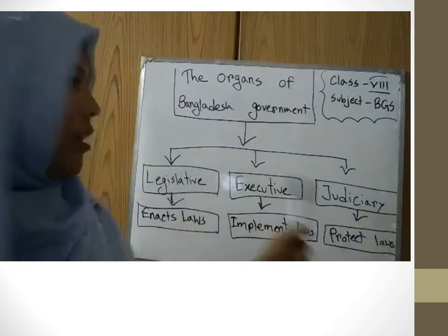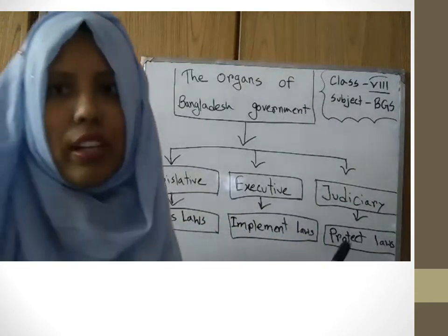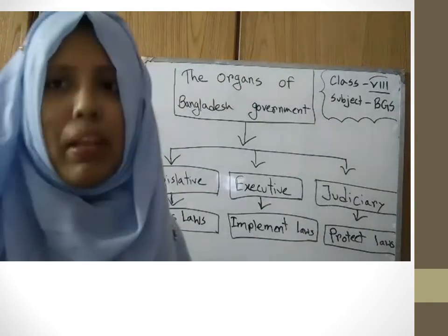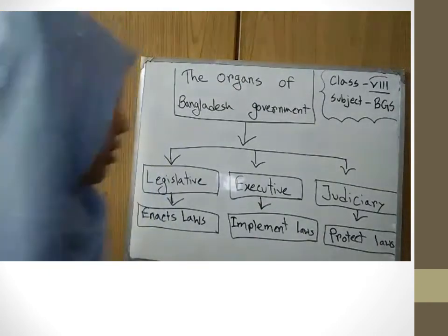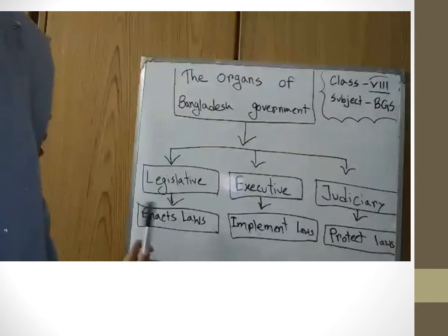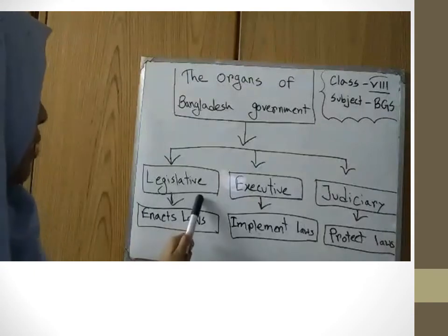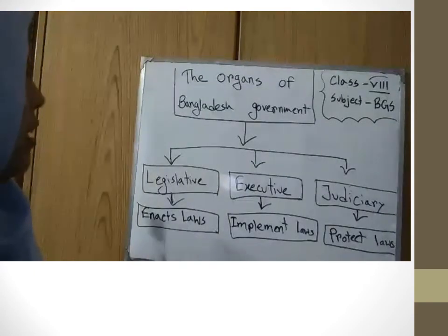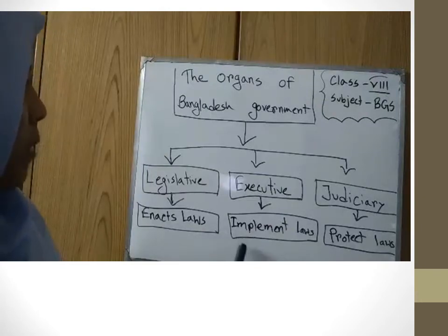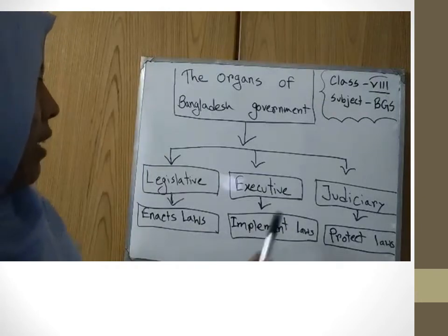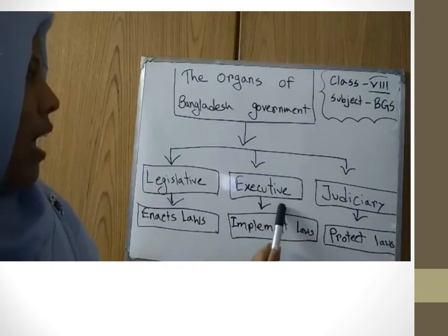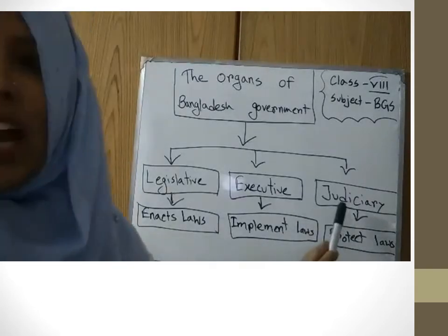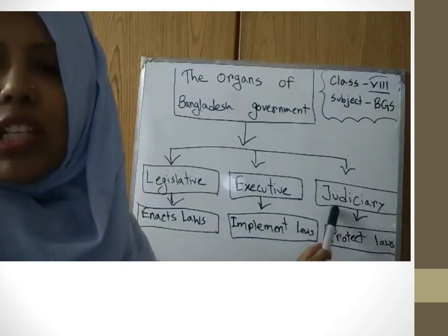These three organs work together. For example, the legislative group enacts laws, those laws are implemented by the executive group, and all laws are protected by the judiciary group.